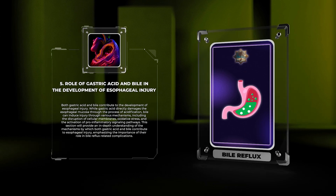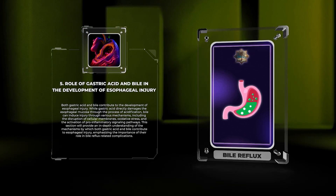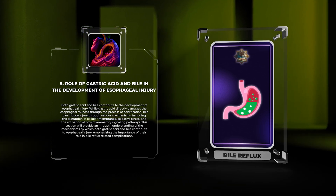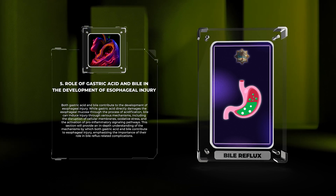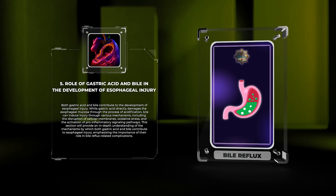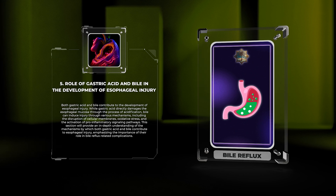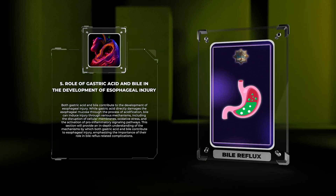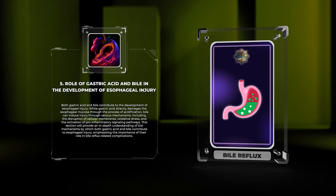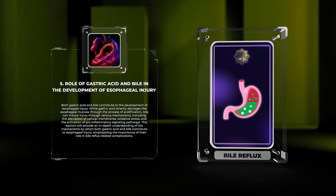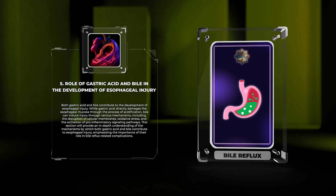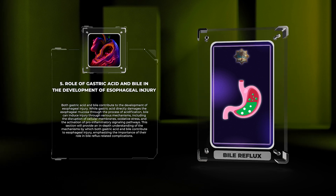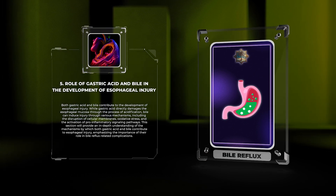Both gastric acid and bile contribute to the development of esophageal injury. While gastric acid directly damages the esophageal mucosa through the process of acidification, bile can induce injury through various mechanisms, including the disruption of cellular membranes, oxidative stress, and the activation of pro-inflammatory signaling pathways. This section will provide an in-depth understanding of the mechanisms by which both gastric acid and bile contribute to esophageal injury, emphasizing the importance of their role in bile reflux-related complications.